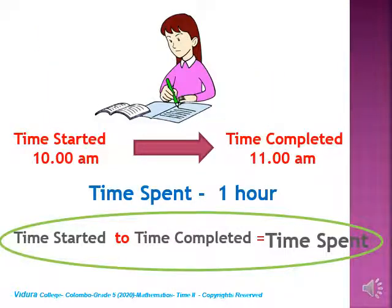Let's see our first example. This student has started answering her mathematics paper around 10 o'clock in the morning and completed it at 11 o'clock in the morning. Can you find the time she spent to answer her question paper? We know that from the time started to time completed took 1 hour. That means time spent is only 1 hour.